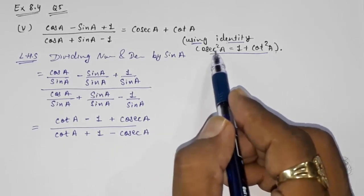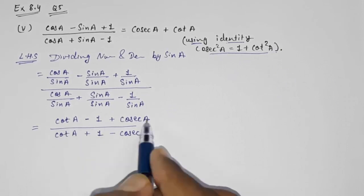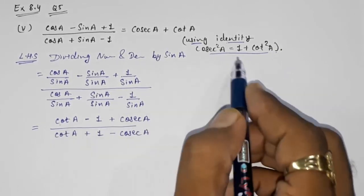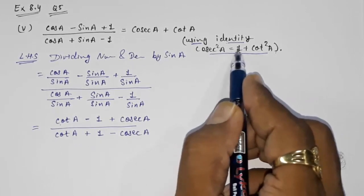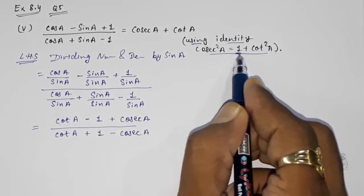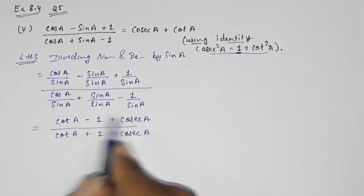Now what we want: we want to use this identity cosec²A equals 1 plus cot²A, but these two numbers are not in square, so we have to take help of 1. Now what I am going to do is I am going to take the value of 1 as cosec²A minus cot²A.